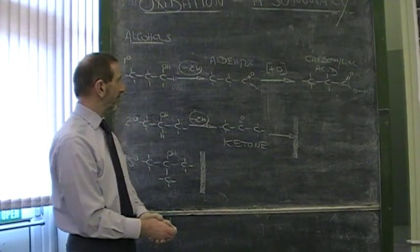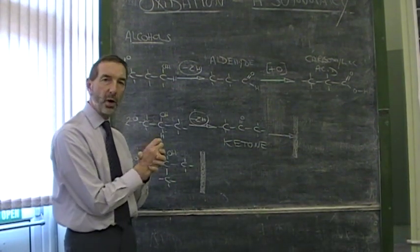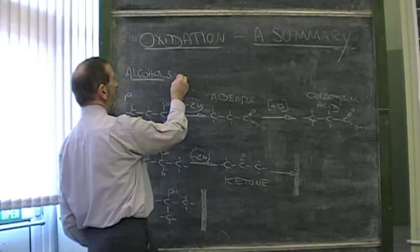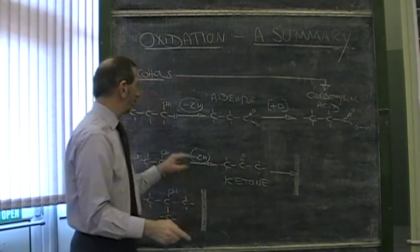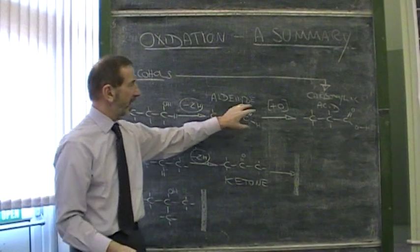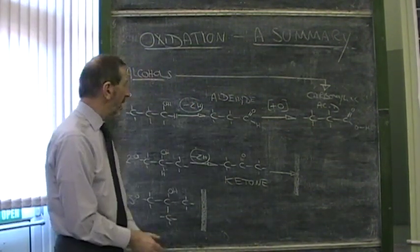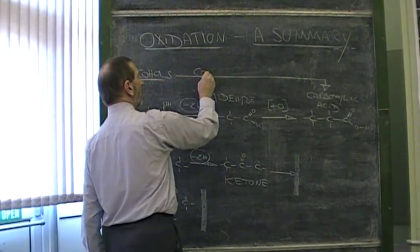But that's not the end of the story. There's one further oxidation and one further oxidizing agent you're expected to know about. And that is, it's possible to go from alcohol straight to acid. We don't have to go primary alcohol to aldehyde to acid. It's possible to go from alcohol to acid in one step. And the oxidizing agent which is often used to do that is copper oxide.